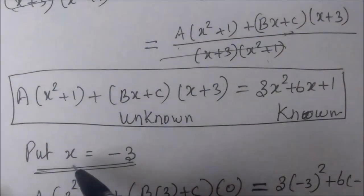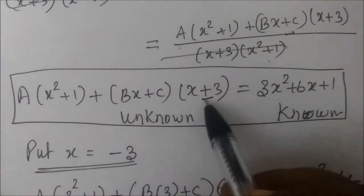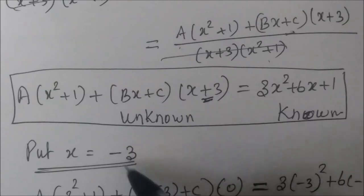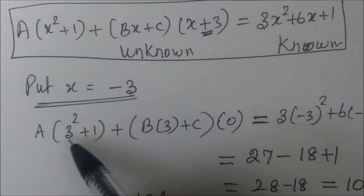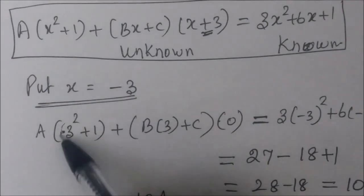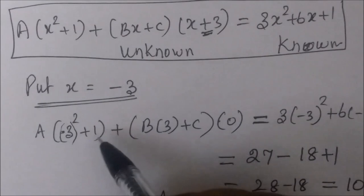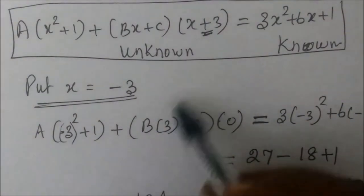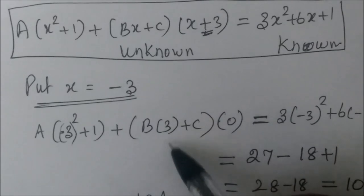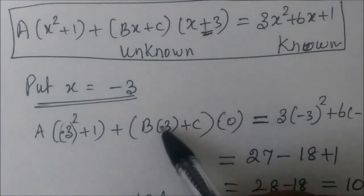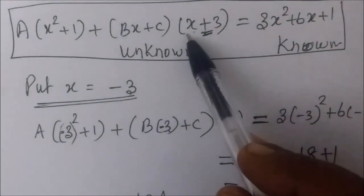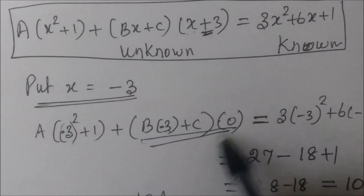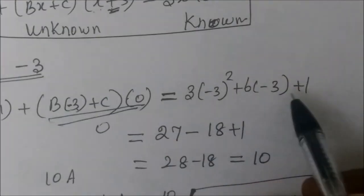Now, put x equal to minus 3. If we have plus 3, we will have minus 3. Wherever x comes, you just write minus 3. If we have minus, we will have minus. If we have plus 3, we will have minus 3. If we have minus 3, we will have minus 3. Now we will have minus 2 by — whatever x comes, you write minus 3.